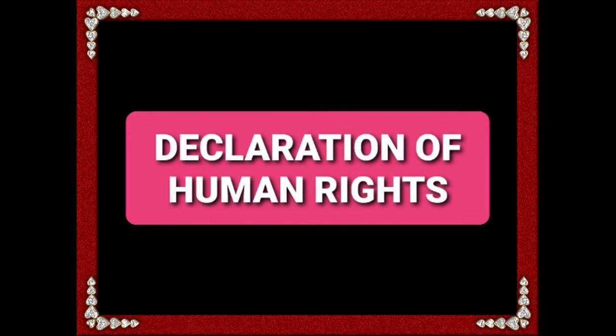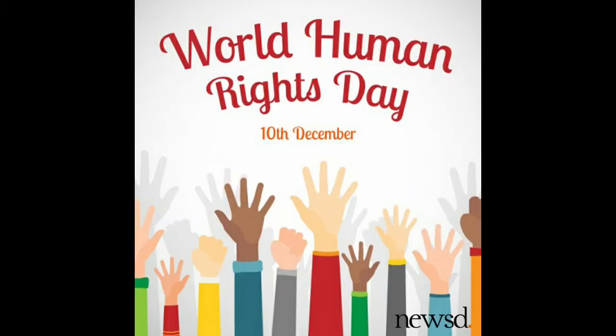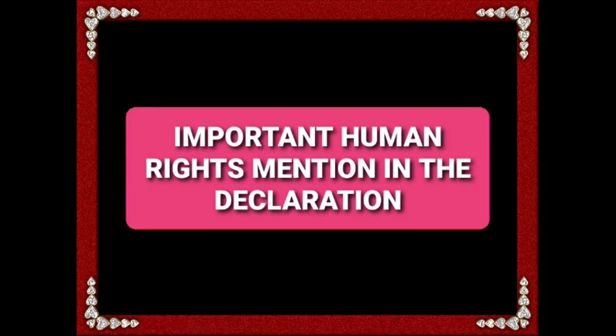Now, the Declaration of Human Rights. The United Nations publicly announced a list of human rights called the Declaration of Human Rights. It adopted the Declaration of Human Rights on 10th December 1948. This day is celebrated as Human Rights Day all over the world. Now, some important human rights mentioned in the Declaration.